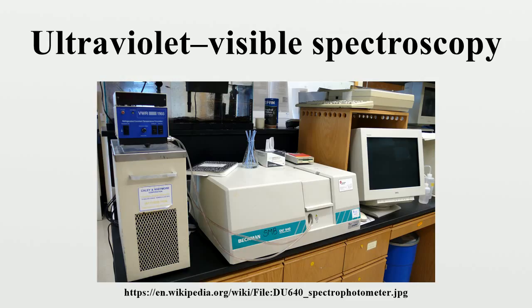Specialized instruments have also been made, including attaching spectrophotometers to telescopes to measure the spectra of astronomical features. UV-visible microspectrophotometers consist of a UV-visible microscope integrated with a UV-visible spectrophotometer. A complete spectrum of the absorption at all wavelengths of interest can often be produced directly by a more sophisticated spectrophotometer; in simpler instruments, the absorption is determined one wavelength at a time. Microspectrophotometry of microscopic samples is done by integrating an optical microscope with UV-visible optics, white light sources, a monochromator, and a sensitive detector such as a CCD or photomultiplier tube. As only a single optical path is available, these are single-beam instruments.